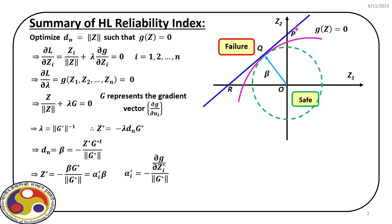From the linear limit state, the moment we move over to a non-linear limit state, which is represented by a pink line on your screen, we discussed how we need to solve an optimization problem to find out the minimum distance beta, which we call the Hasofer-Lind Reliability Index. For that optimization, our objective function is dn, which is equal to the norm of z, where z represents any point on this limit state.